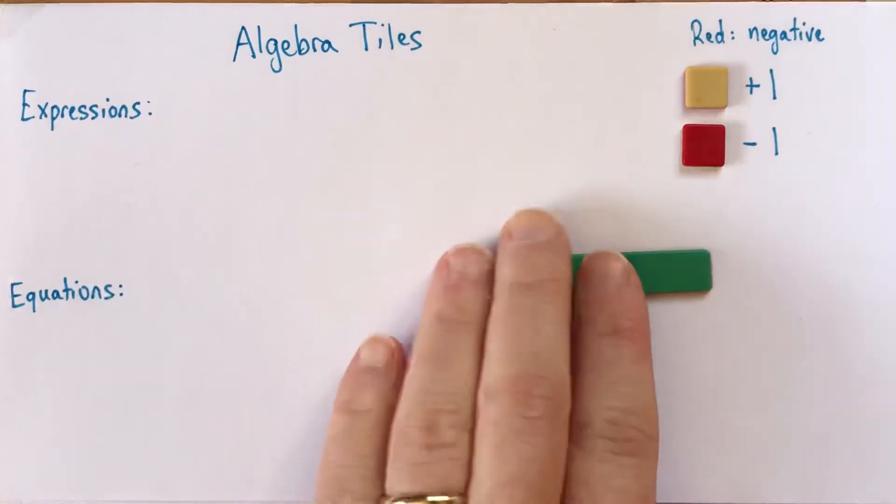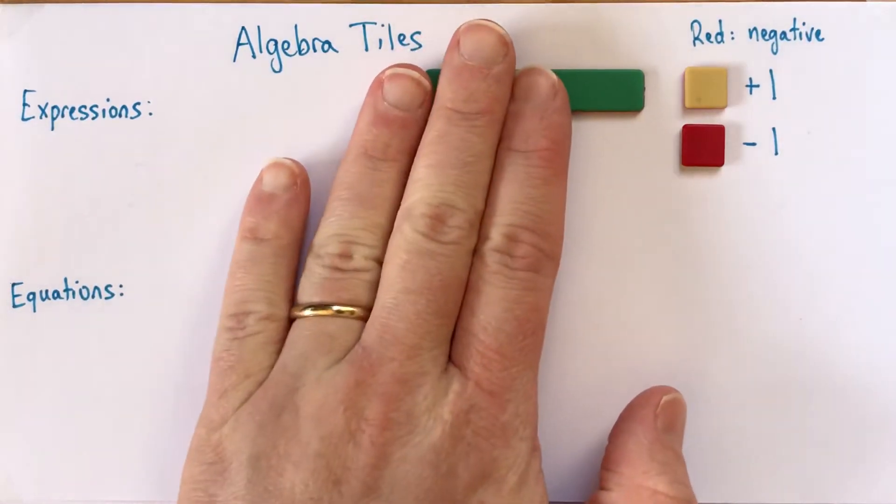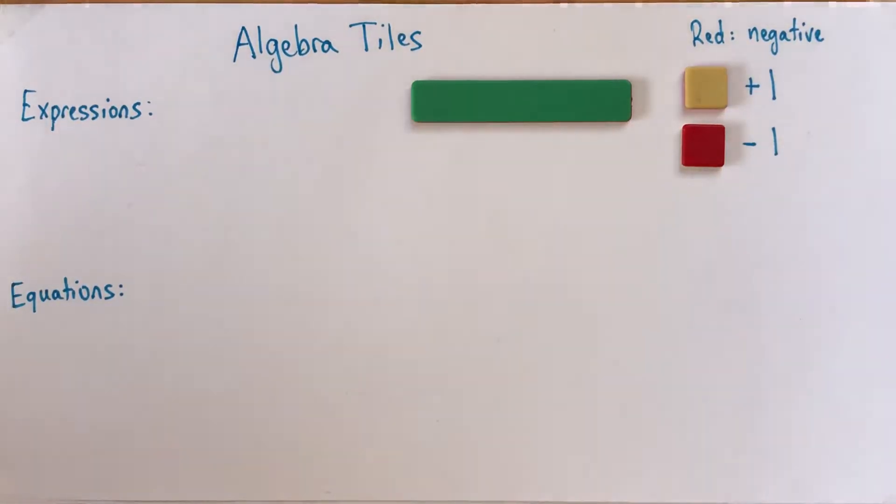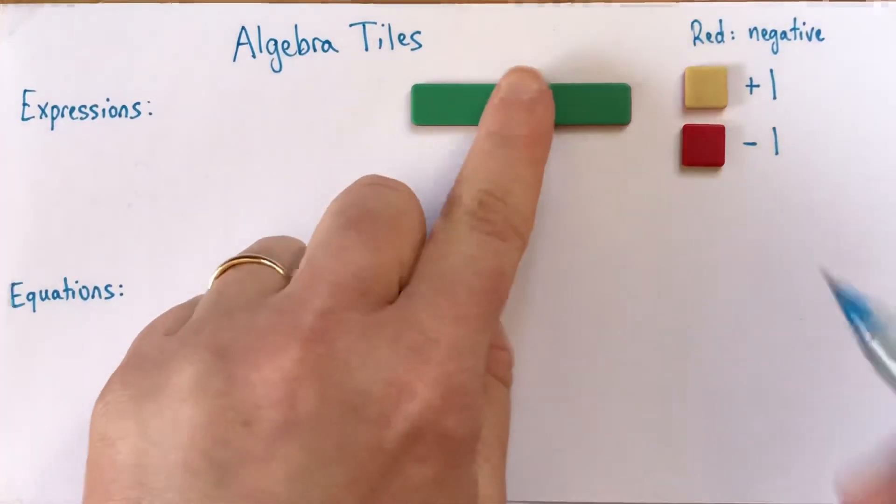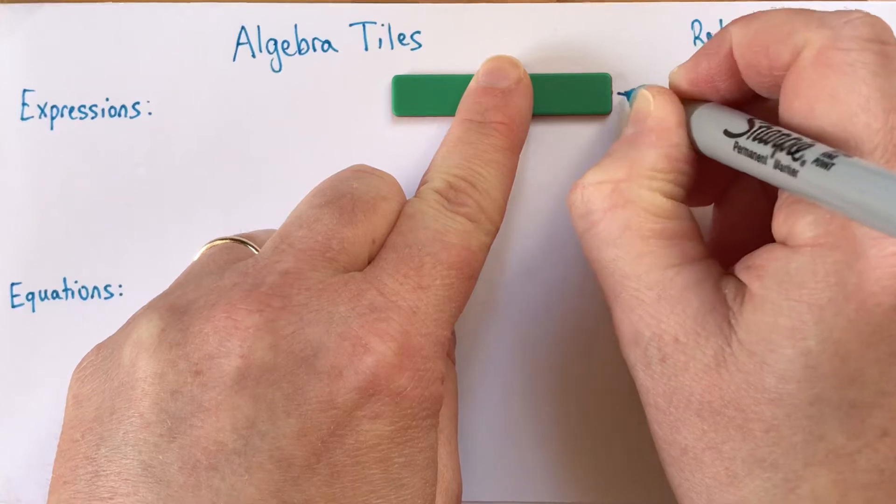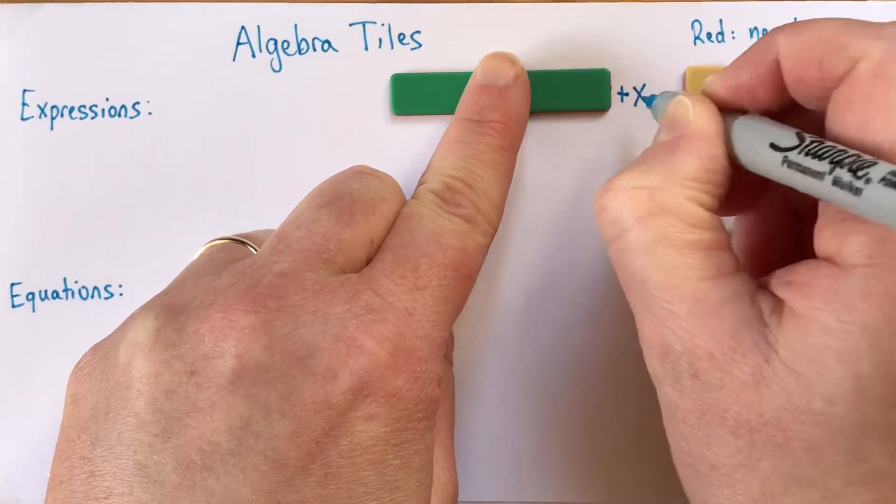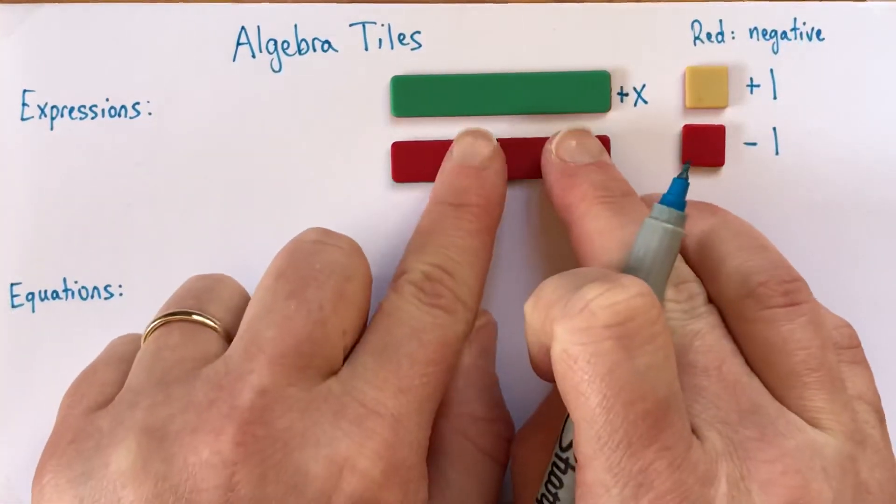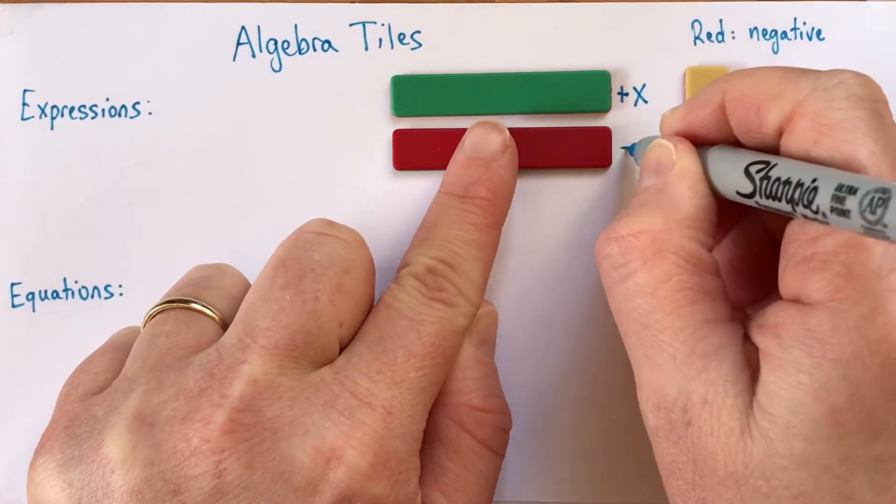And again, this one will represent positive X, or just X, often we'll say. And if I flip it over to the red side, this is negative X.